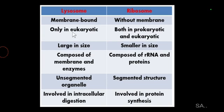Lysosomes are cell organelles that are membrane-bound, while ribosomes are without a membrane. Lysosomes are found only in eukaryotic cells, since they are cell organelles and are not available in prokaryotic cells. Ribosomes, on the other hand, are present in both prokaryotic and eukaryotic cells.